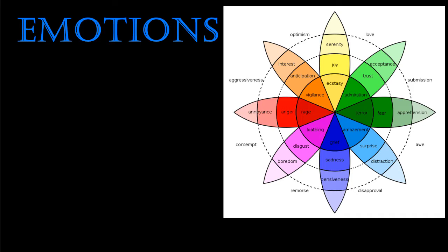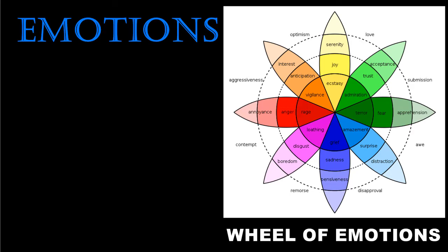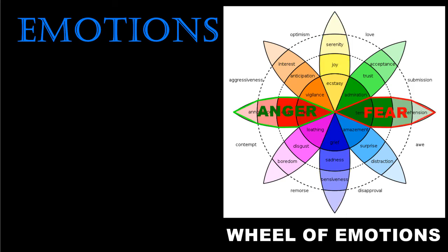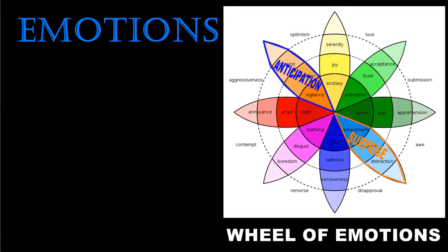In 1980, psychologist Robert Plutchik proposed a model of human emotions called the Wheel of Emotions. This model includes eight primary emotional dimensions that are positioned as opposing feelings: joy versus sadness, anger versus fear, trust versus disgust, and surprise versus anticipation.